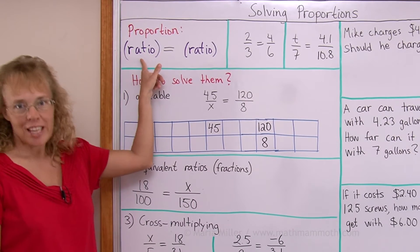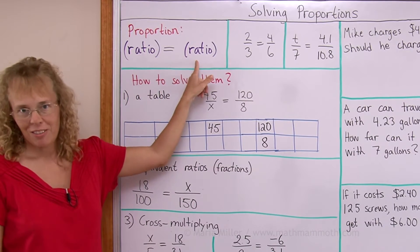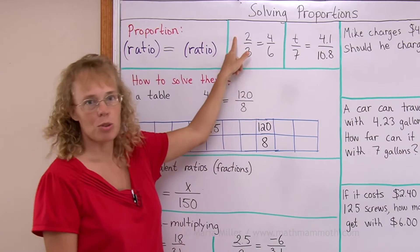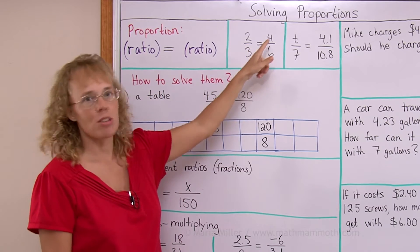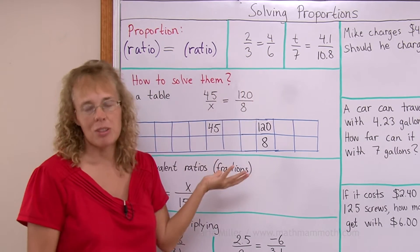Well, it is where you have a ratio equaling another ratio. Here's two examples. One ratio is 2 to 3, and then another ratio is 4 to 6, and they are equal, so that's a proportion.